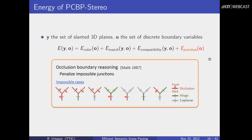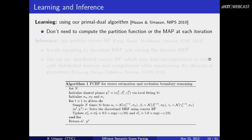Probably the most interesting potential is that you can reason about the physical validity of junctions — when you have three or more superpixels meeting. There are only certain configurations of occlusion boundaries that are physically possible. For example, if this occludes this, and this occludes this, then this one has to be occluding that one — the transitivity property. This was something Jitendra Malik did for his PhD a long time ago, enumerating which junctions are actually possible. Who in the audience is familiar with Markov random field learning and inference? Okay, about three people.